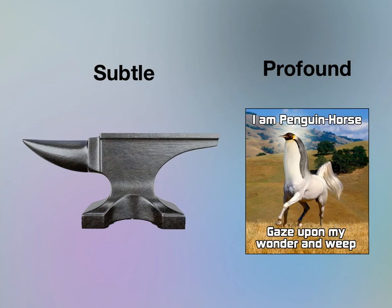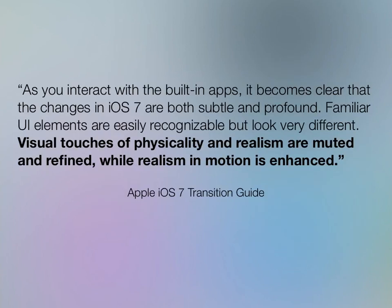When I looked at the documentation again, I noticed a more relevant bit. Apple is de-emphasizing physicality — i.e., making stuff look realistic — and emphasizing motion. So de-emphasizing physicality and emphasizing motion is kind of the core of what Apple says iOS 7 is.